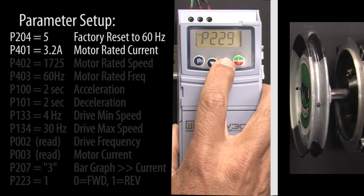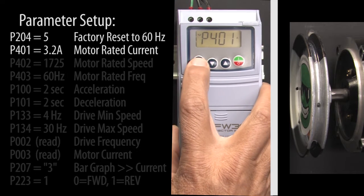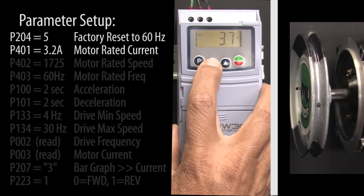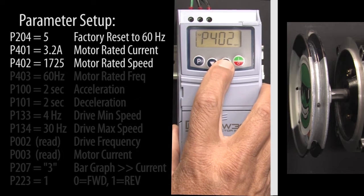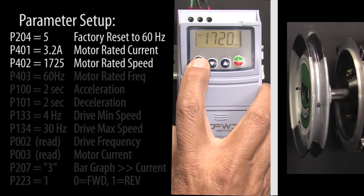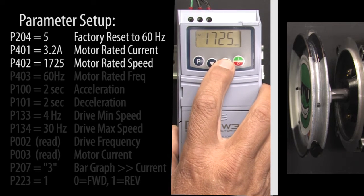Scroll to parameter 401 which is the motor's rated current. Ours is 3.2 amps so we enter that and press P to accept it. Parameter 402 is the motor's rated speed, we'll modify that to 1725 and hit P to accept that.